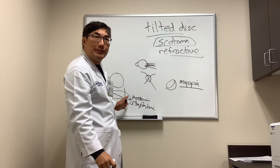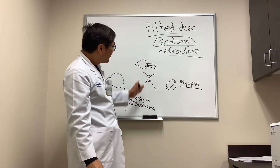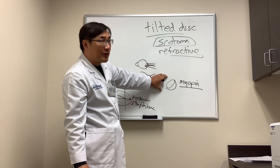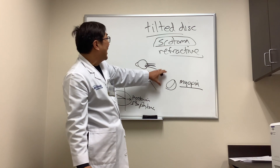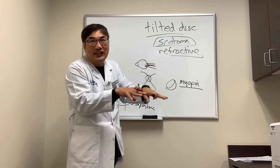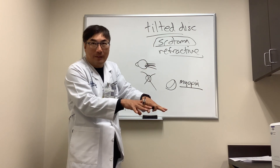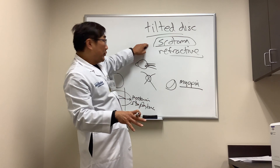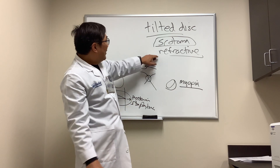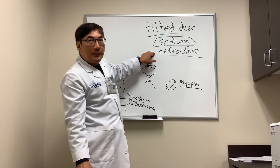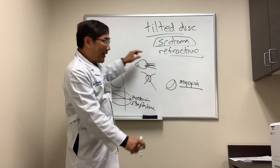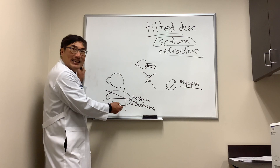One reason you could have a scotoma here is that your nerve is actually tilted and hypoplastic. If the nerve is hypoplastic, it actually has less nerve fiber layer, and that produces a real scotoma — because you don't have nerve fiber layer — as opposed to a refractive scotoma.